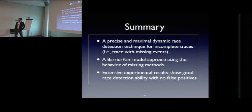I think I can stop here and summarize it. So we've introduced a new approach, powered by a new model called barrier pair, which can guarantee a race detection technique to be precise and maximal. And we have conducted extensive experimental evaluation on real-world large systems and showing the race detection ability with no false positives. Thank you.